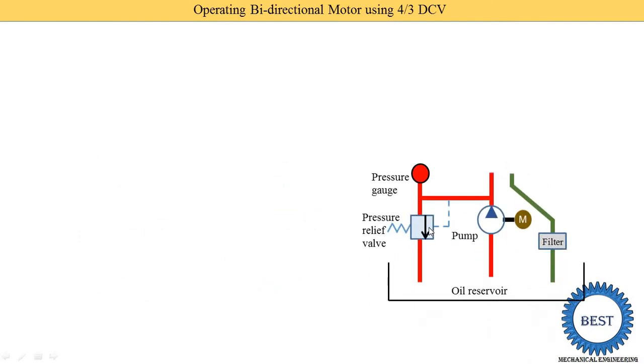First, let's understand this diagram. This is the basic hydraulic system: oil reservoir, pump, suction pipe, delivery pipe — the pump is run by a motor — and this is the return line and filters.